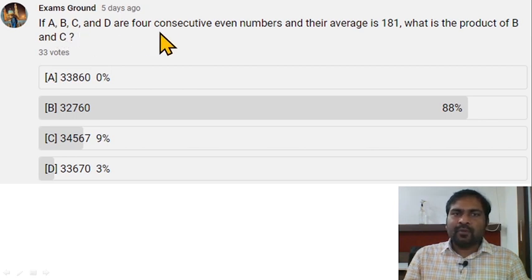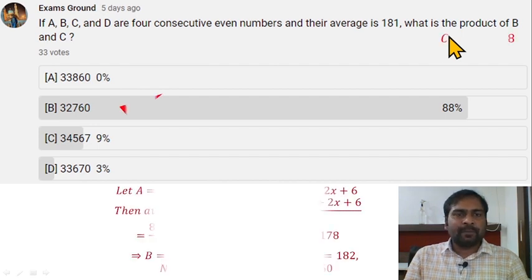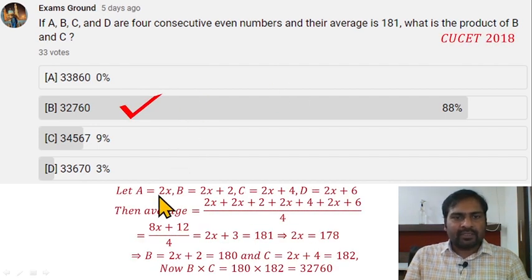Here, option D is correct: Rig Veda. It is the oldest one. If A, B, C, and D are four consecutive even numbers and their average is 181, what is the product of B and C? Let the numbers be 2x, then the second number B = 2x + 2, third C = 2x + 4 because these are consecutive even numbers, and also D = 2x + 6.